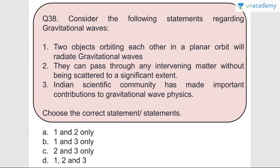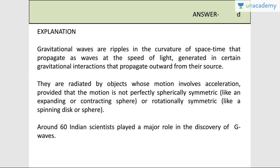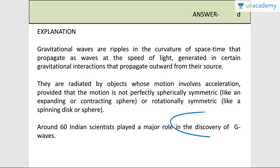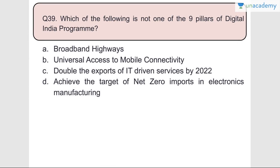Question number thirty-eight: Consider the following statements regarding gravitational waves. Two objects orbiting each other in a planar orbit will radiate gravitational waves - absolutely correct. They can pass through any intervening matter without being scattered to a significant extent - 100% correct. Indian scientific community has made important contributions to gravitational wave physics - correct. Answer is D, all three. Gravitational waves are ripples in the curvature of spacetime that propagate as waves at the speed of light. Around 16 Indian scientists played a major role in the discovery of gravitational waves.